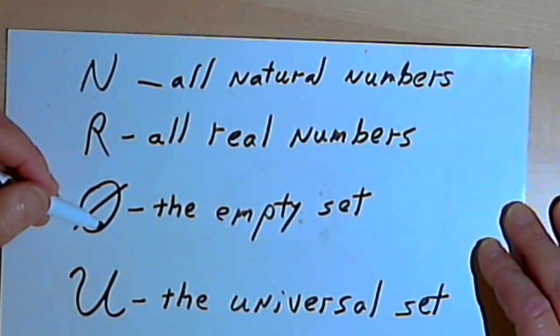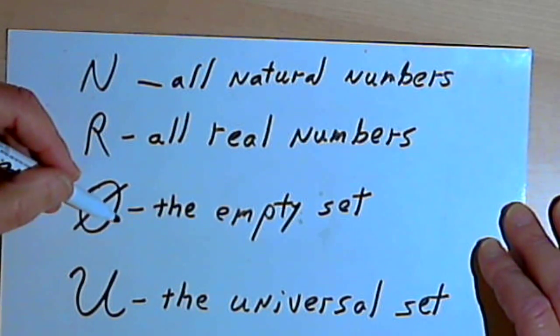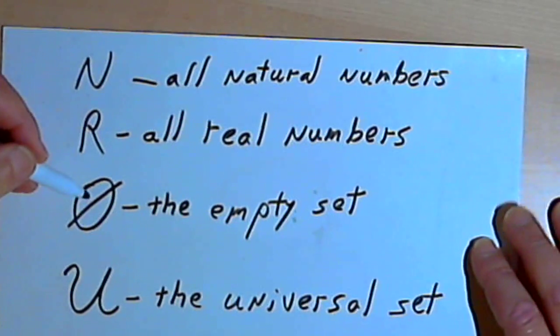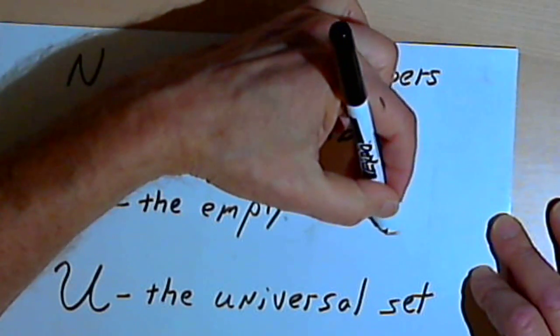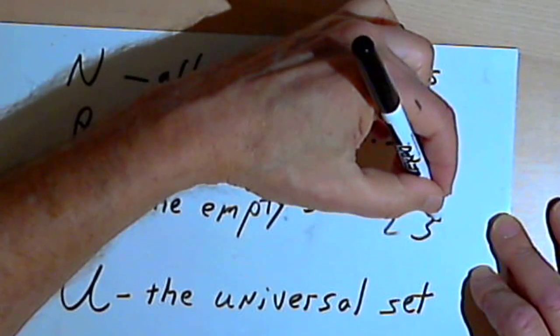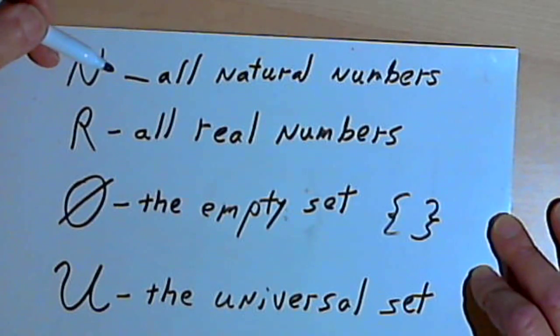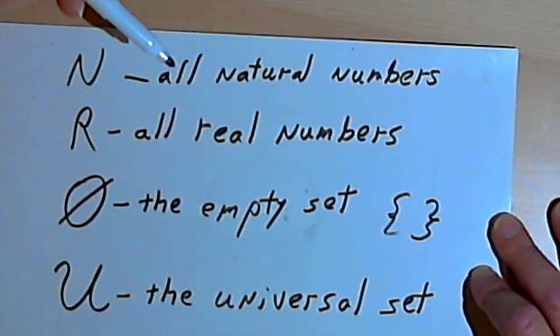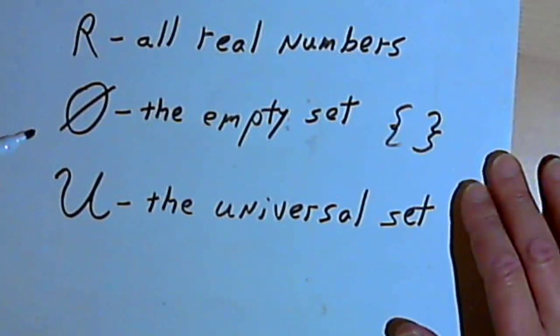There's something called an empty set. If you have a set with no objects in it, it's an empty set. And we can show that empty set by writing a big circle with a slash through it. Another way to show the empty set would be to just put those curly braces that hold the elements, the members of the set, and don't put anything inside the curly braces.